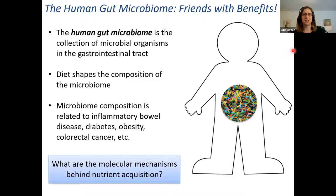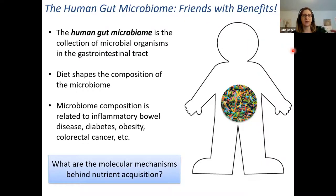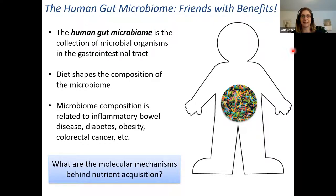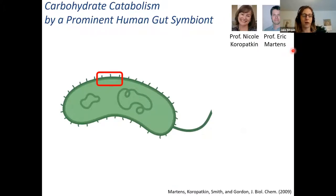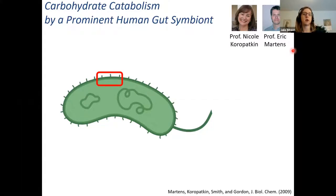Let me introduce the system. Most of us have heard about the microbiome. Microbiomes are just collections of bacteria that affect some function. The microbiome I've been thinking about a lot is the human gut microbiome, which affects our ability to acquire nutrients and is also related to some sorts of inflammatory diseases. This is a great collaboration that has been underway for over 10 years since I started at the University of Michigan. My lab is a chemistry and biophysics lab. We work together with Professor Nicole Koropatkin in our med school, who is a structural biologist and microbiologist, and Eric Martens, who is a microbiologist and geneticist. Nicole and Eric have been thinking for a long time about a prominent human gut symbiont called Bacteroides thetaiotaomicron — it's prominent in your gut and the most well-studied gut organism.